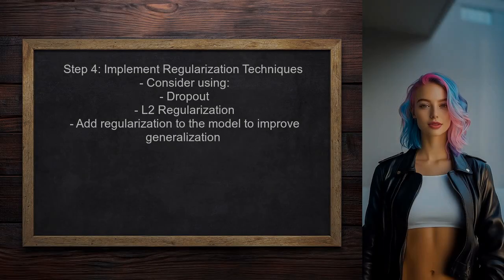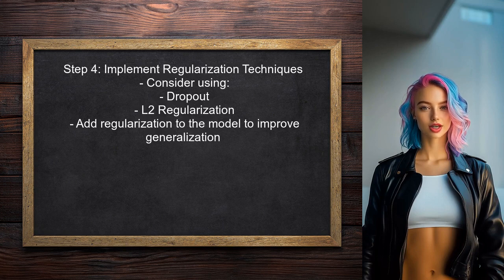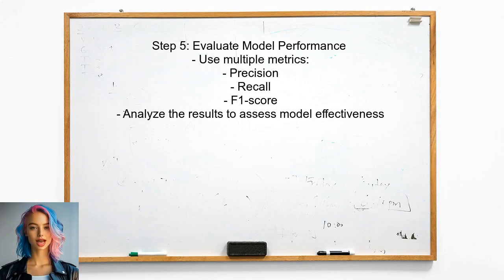Additionally, the user might want to implement regularization techniques. Regularization can help prevent overfitting and improve the model's ability to generalize to new data. Techniques like dropout or L2 regularization can be beneficial. Finally, the user should evaluate the model's performance using different metrics. Instead of relying solely on error, using metrics like precision, recall, and F1 score can provide a better understanding of how well the model is performing.